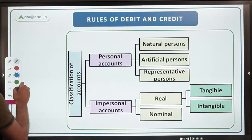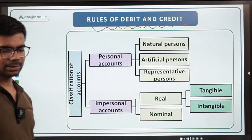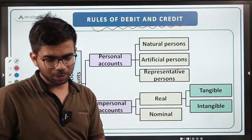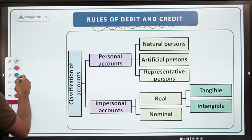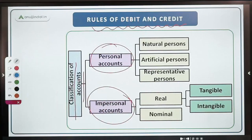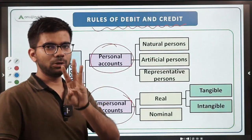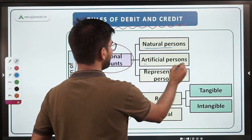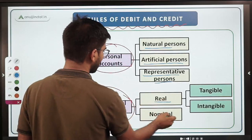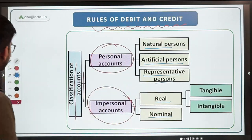Now some important rules of debit and credit — these are very fundamental rules everyone must know. Accounts can be classified into personal accounts and impersonal accounts. Personal accounts can be further classified into natural persons, artificial persons, and representative persons. Impersonal accounts can be classified into real accounts and nominal accounts.